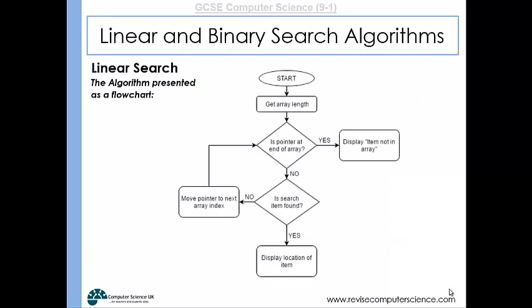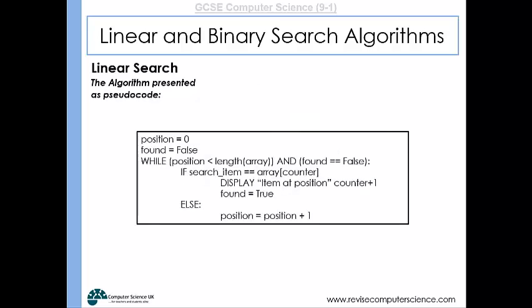Here's a simple flowchart for a linear search. We get the length of the array, check whether the pointer is at the end. If not, we check whether the searched-for item is found at that location. If not, we move the pointer to the next index. This continues until either we reach the end — meaning the item wasn't found — or we display the location where the item was found.